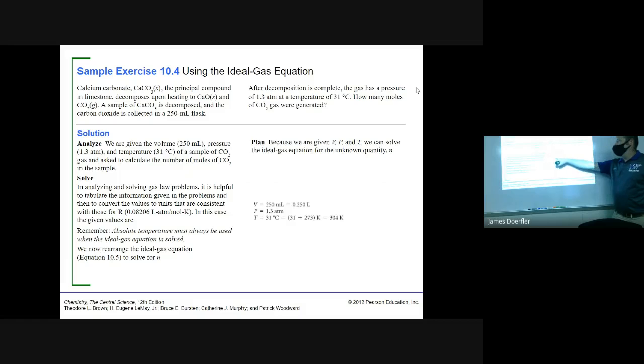What we know: We know our volume was 250 milliliters. We have to convert that to liters. In order to convert from milliliters to liters, you have 250 milliliters, one liter is equal to 1,000 milliliters, and we get 0.25 liters. Pressure is already given in atmospheres of 1.3. And temperature needs to be changed from 31 degrees Celsius to Kelvin. So you add 273 to the 31, you get 304 Kelvin.